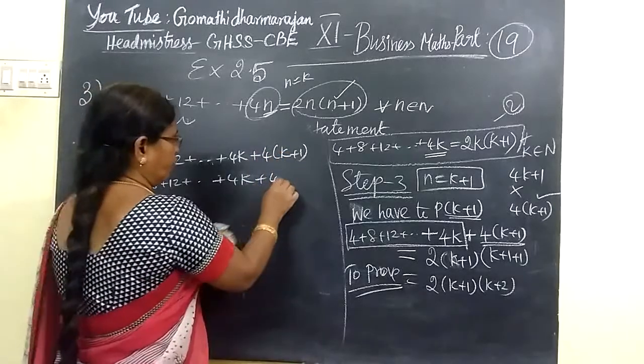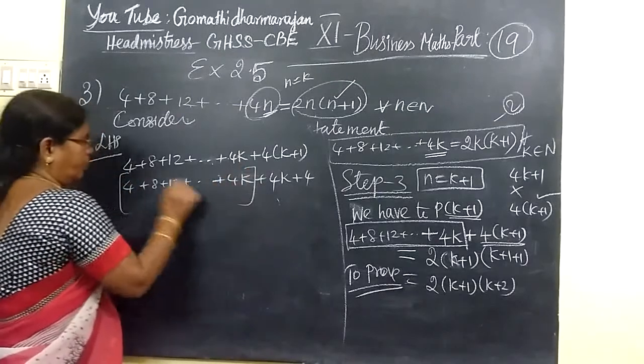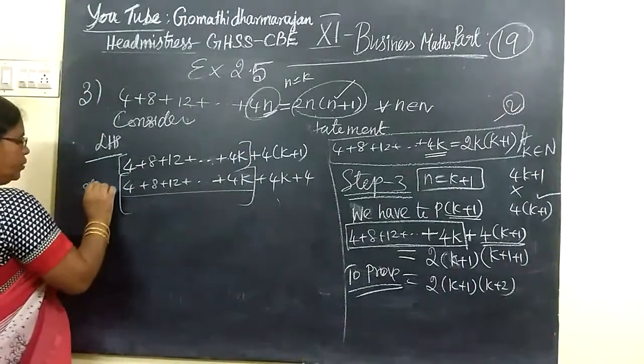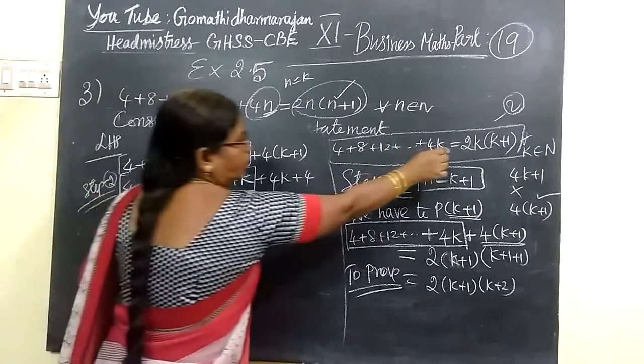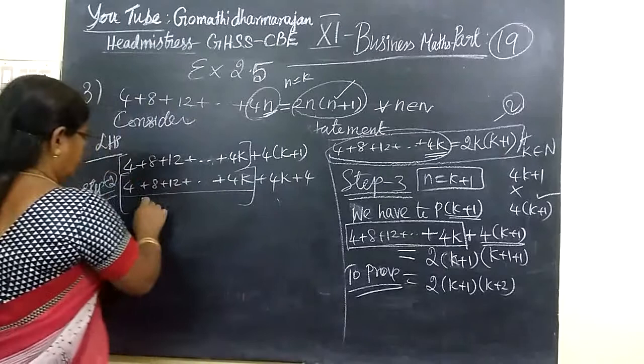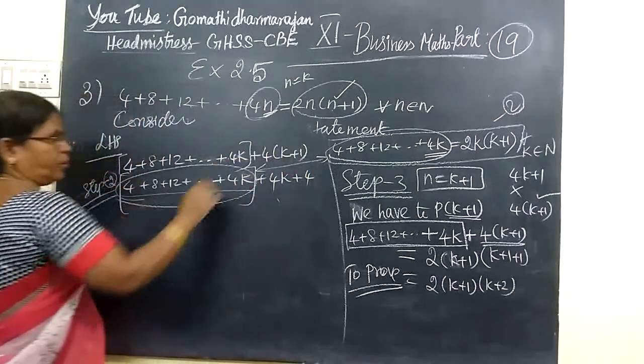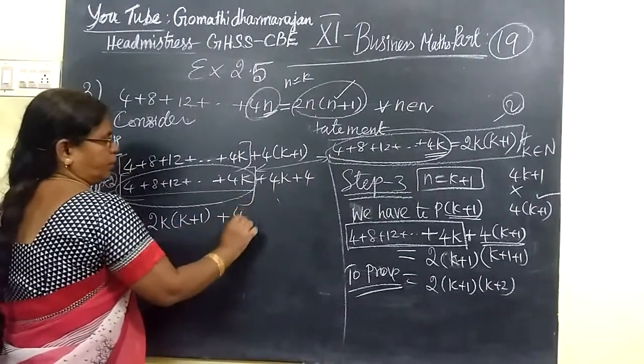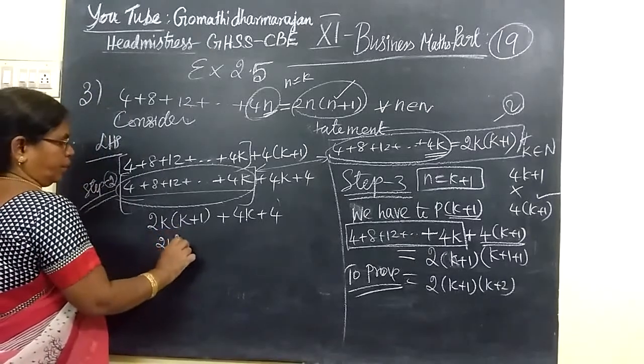But every term is 4 times that number. So you are writing 4 times K plus 1. So this is the 4K. This is different. As we discussed, 4K plus 4 bracket K plus 1. That is 4K plus 4 of the summation. Yes, we come to that, we are using what? Step 2.